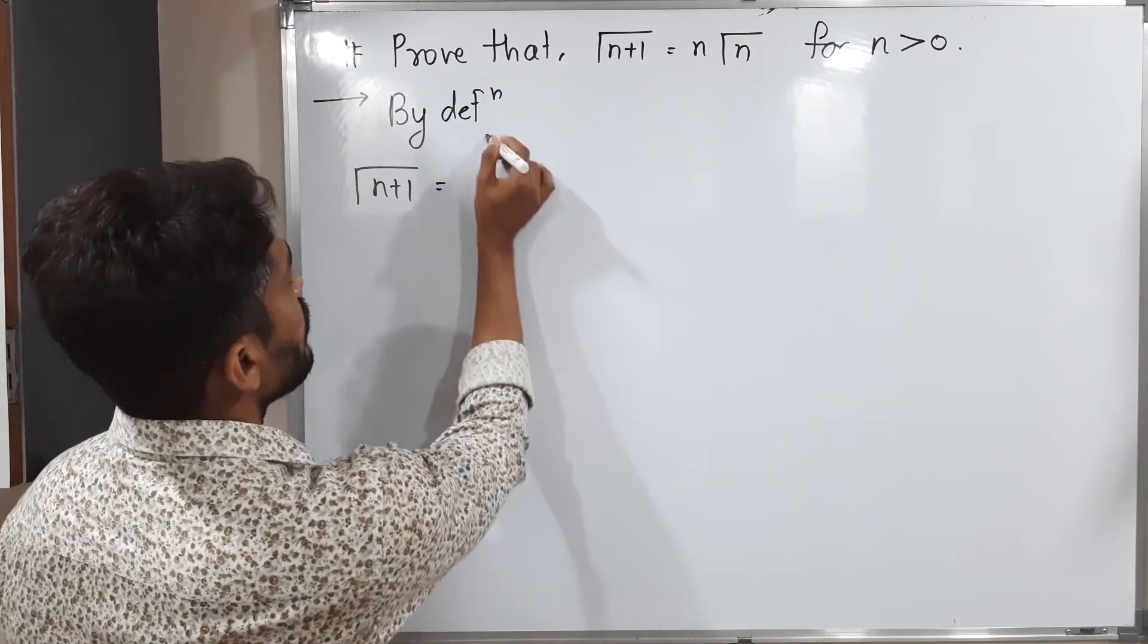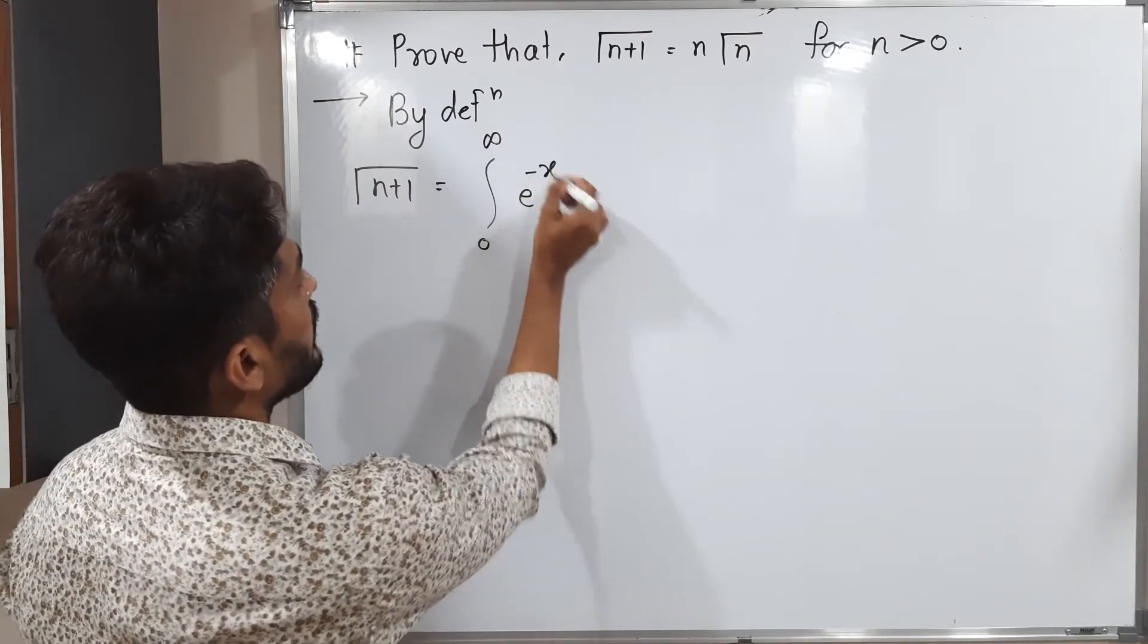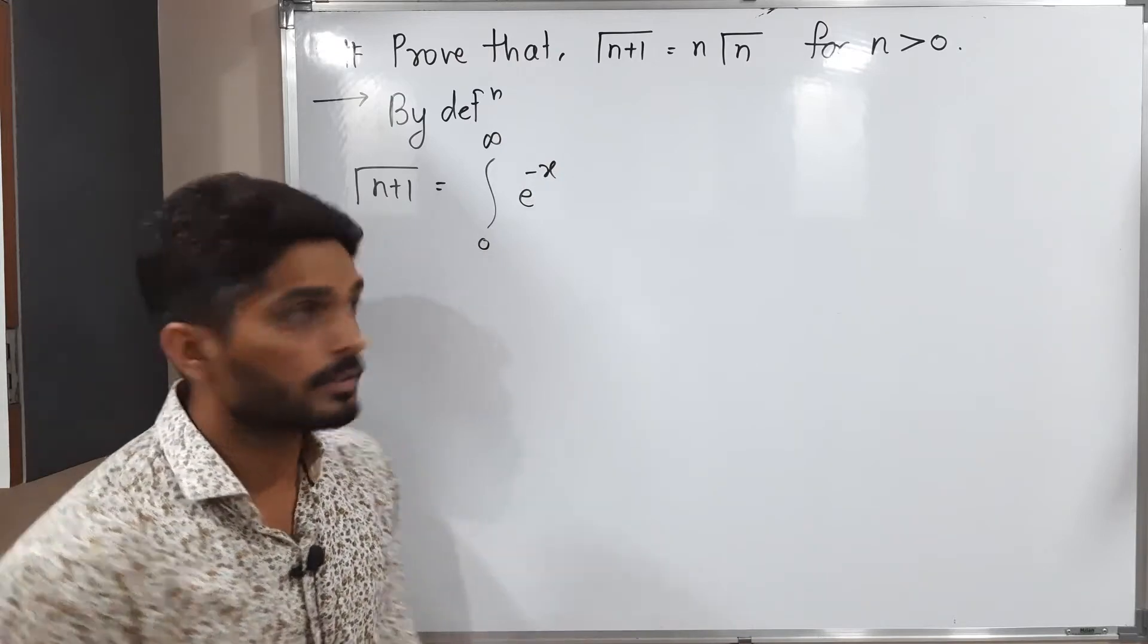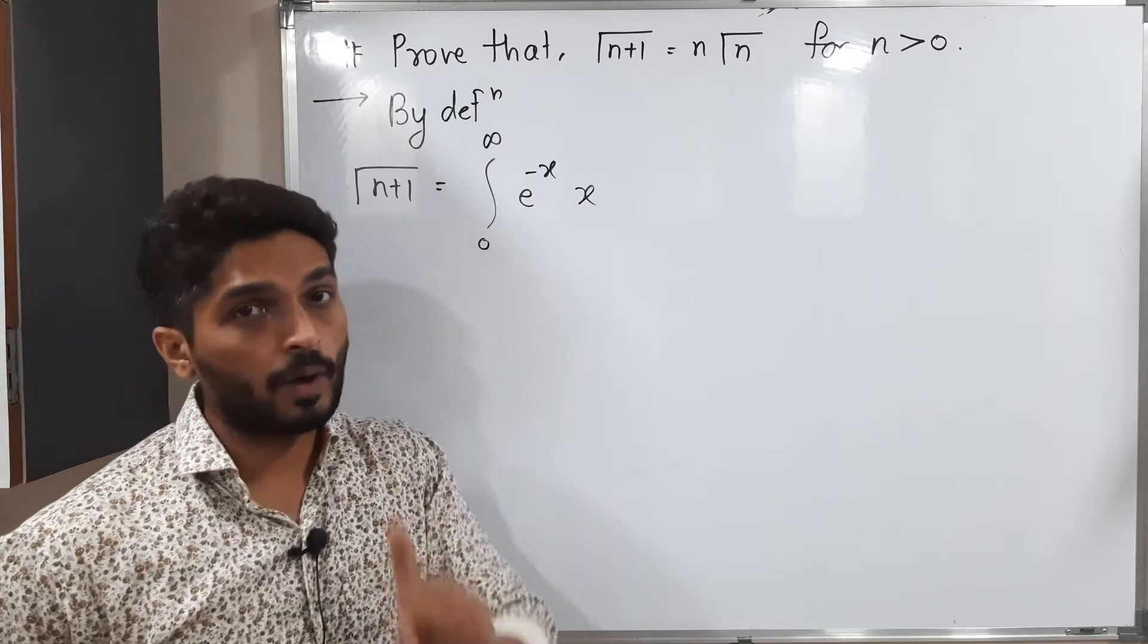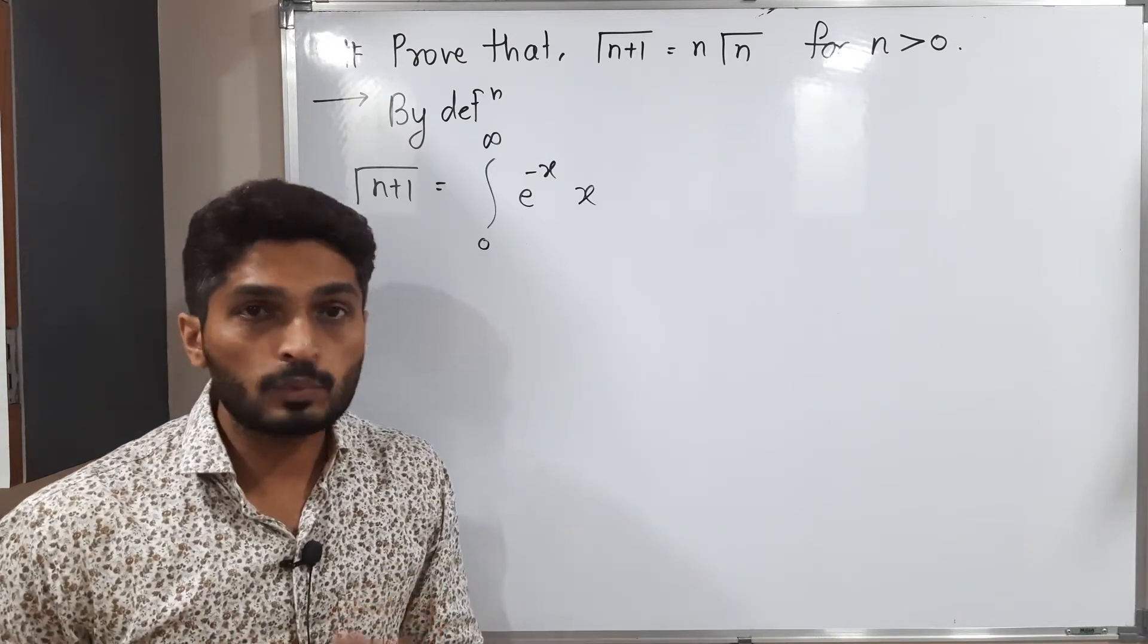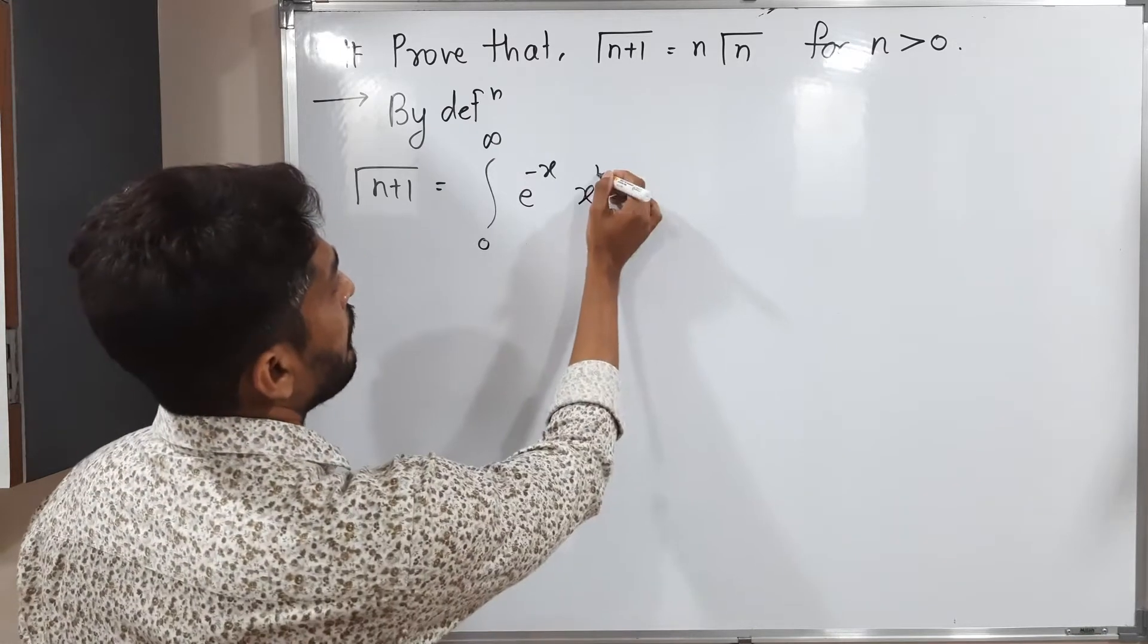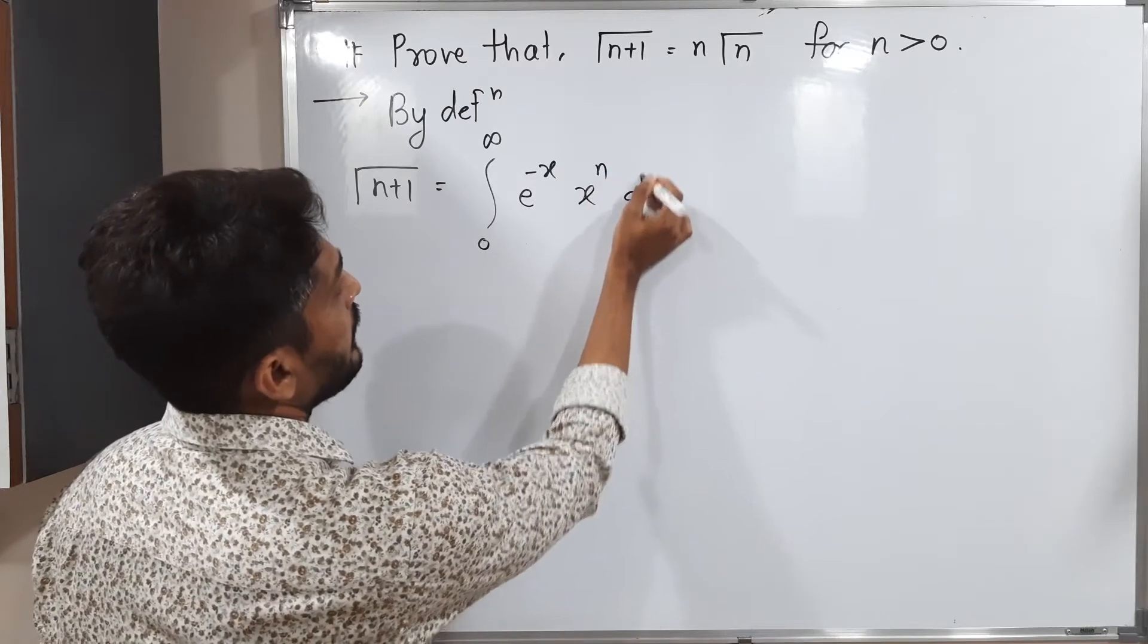So the definition says it's 0 to infinity e raised to minus x. It is fixed. After that we write x raised to one number which is less than this number by 1. So we have n plus 1, so obviously I'm supposed to write x raised to n here dx.